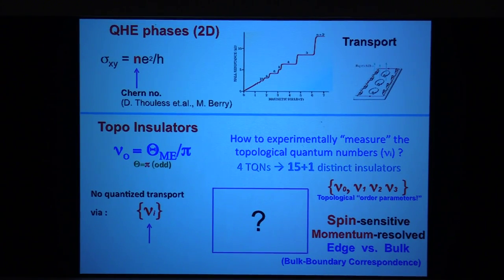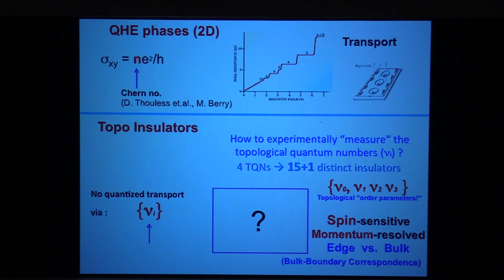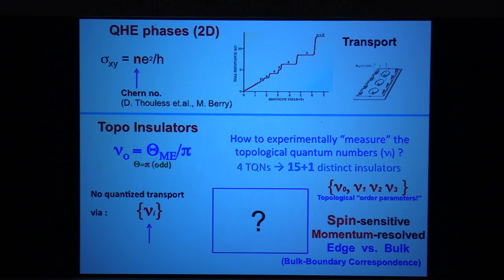These experiments are extremely difficult. And even when they're done, they're only going to tell you just the first invariant — they're not going to tell you what the other invariants are. And these other invariants are quite interesting, especially when you try to realize topological superconductivity. There is another way of measuring the first invariant, which is very interesting, and magneto-electric quantization comes from that.